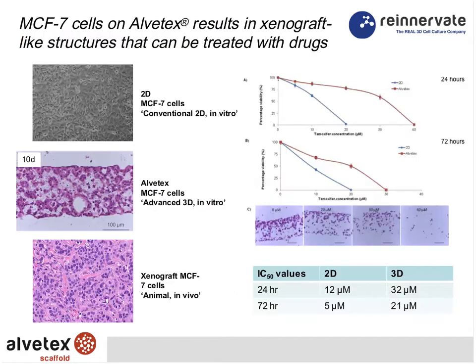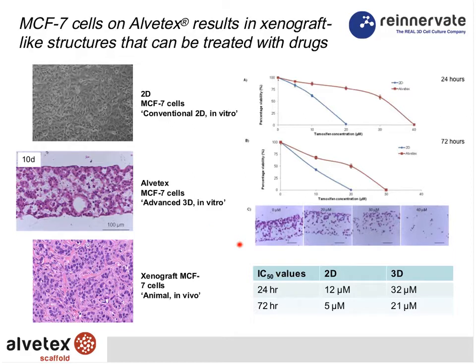Looking more closely at MCF7 cells: in 2D conventional culture, in a xenograft in an animal, and with Albatex technology positioned in between — cells growing in 3D are proposed to be closer to the animal situation than the monolayer. We create 3D cultures in Albatex and treat them with various drugs, for example Tamoxifen, adding different concentrations after three days of growth. We can see cells being knocked down and calculate IC50 values, which are different between the two culture systems.